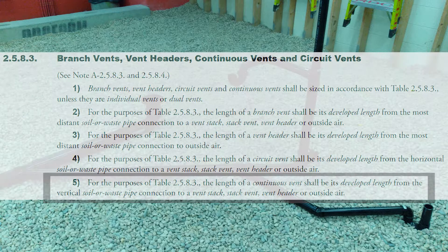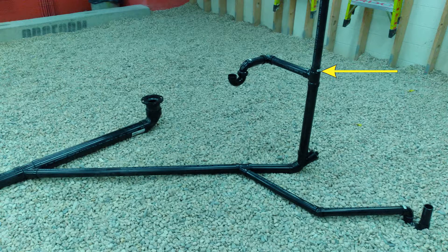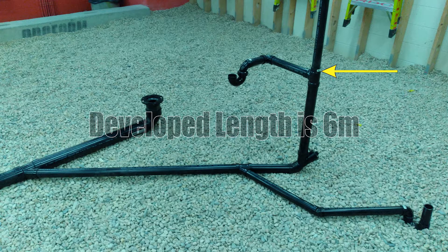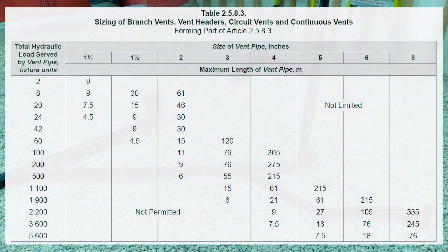To simplify that, I'm going to start my measurement at the highest point of the wet vent and measure to one of my three major vents or outside air, whichever is closest. In this example, I'm measuring from this point out to outside air, and I'll pretend that is six meters. Now I'm going to look at table 2583 — I've discussed how to use this table in detail in other videos, so let's just look up our size.